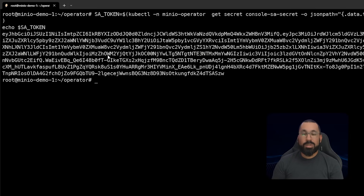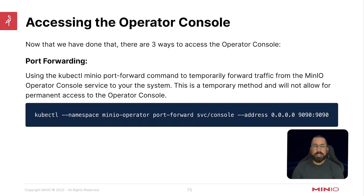At this point we are about ready to access the UI. There are three different ways to do that. The first way is port forwarding, which is probably the easiest because you don't have to do any additional configuration - though use it at your own risk as it may not work for you. This is ephemeral and temporary: if you run kubectl port-forward and forward address 0.0.0.0 to port 9090 on your local machine, you get temporary access, but once that port-forward command stops running, you lose access. Port forwarding is not the recommended long-term method.